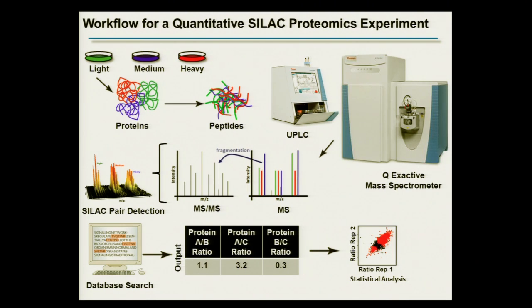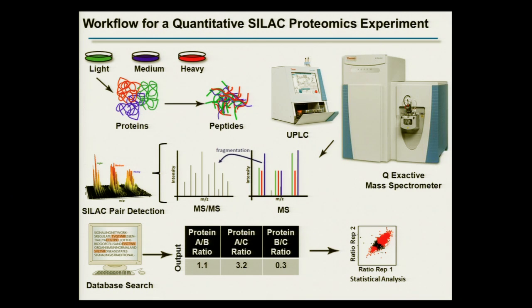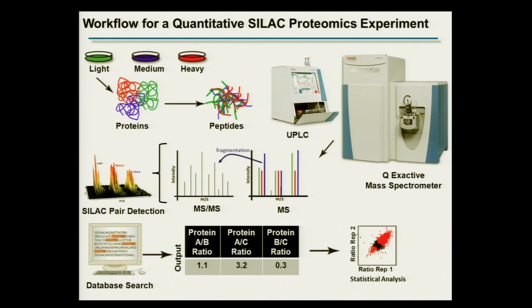This is the same workflow now with the addition of the quantitative component, shown as an example for a SILAC proteomics experiment. You have three cellular states labeled light, medium, or heavy. You generate peptides, do LC-MS/MS with the Q-Exactive, and now your MS spectra have three signals for every peptide — your three SILAC states. After fragmentation, you choose an algorithm that can both quantify and identify peptides. Your output is not just a catalog, but identified peptides and proteins with corresponding ratios, which you can then analyze statistically to determine what is changing.